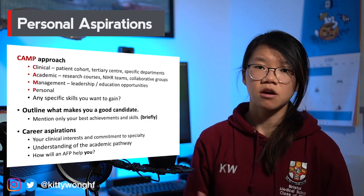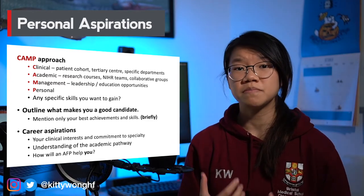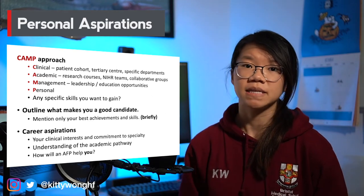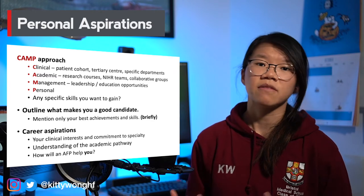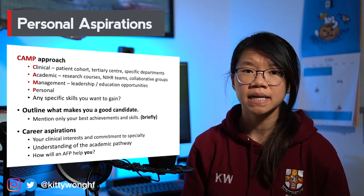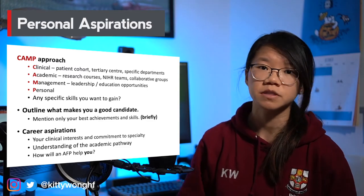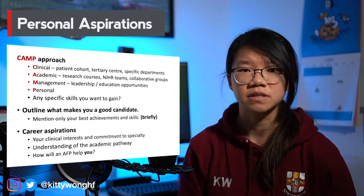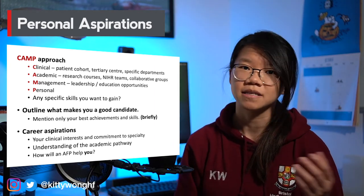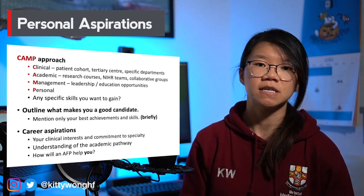You also want to talk about specific skills you're hoping to gain from this AFP post or deanery. Some deaneries may ask what makes you a good candidate for the AFP — mention only your best achievements and briefly cover why they fulfil all aspects of being a good academic, such as following the CanMeds model. Save detailed examples for other questions on research or educational leadership. For career aspirations questions, cover your clinical interests and commitment to specialty, show your understanding of the academic pathway — AFP, then ACF, then ACL, then clinician scientist, then professor — and stress how this particular AFP post will help you get there.